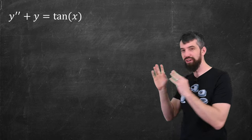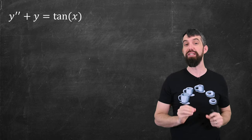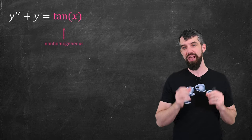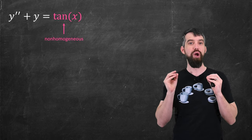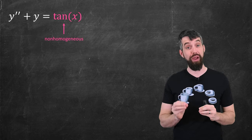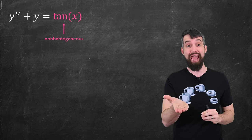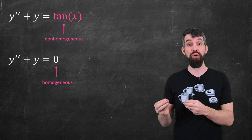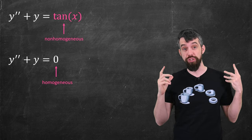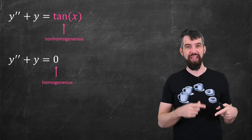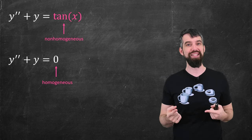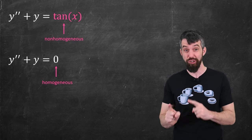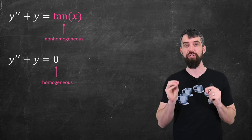The part that is particularly challenging about this differential equation is the right-hand side. This is called a non-homogeneous differential equation because of this tan of x. In contrast, an equation like y'' + y = 0 is a homogeneous differential equation. The idea is that on the left-hand side we have all the dependencies on y, and on the right, the question is: is it zero or is it some other function?